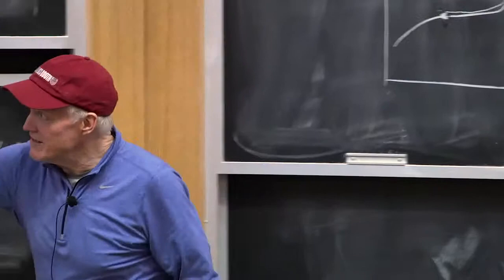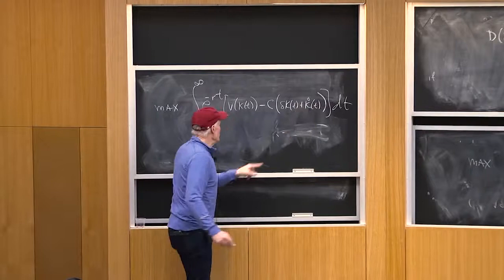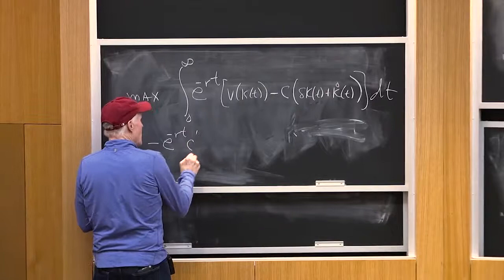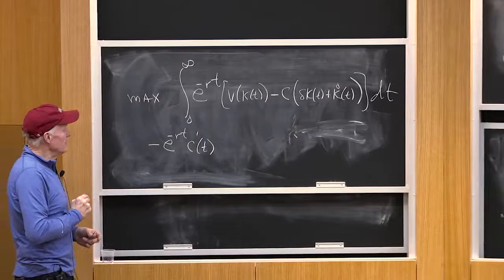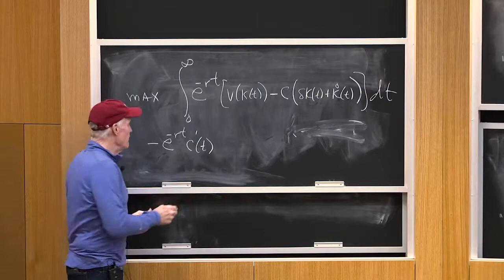Look at what's the first order condition going to be for that. Well, at date t, I'm going to increase k dot, right? So I'm going to get a minus e to the minus rt, c prime at t, right? C prime evaluated at t. Anybody agree with that? That's the cost of increasing k dot. That is, I'm going to pay c. It's a negative because it's a cost. That's what it's going to do to mine.